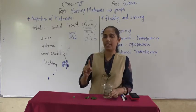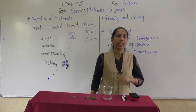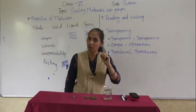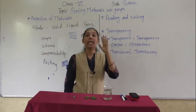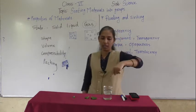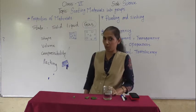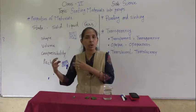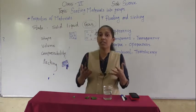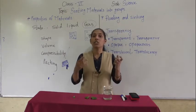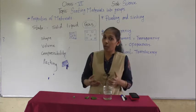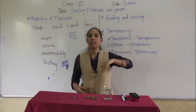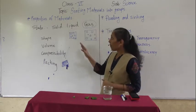Some materials are heavier and they sink in water — meaning they settle at the bottom. Materials that are lighter than water float on the water. The leaf is floating on the water. You can do this experiment with different objects like an eraser, pencil, sharpener, or a ball to find out whether each object sinks or floats. This is the next property of material.